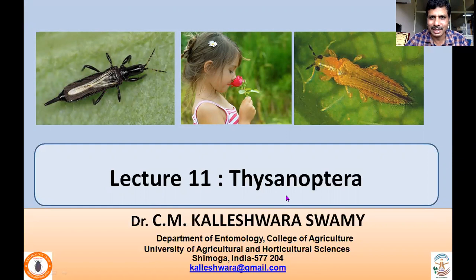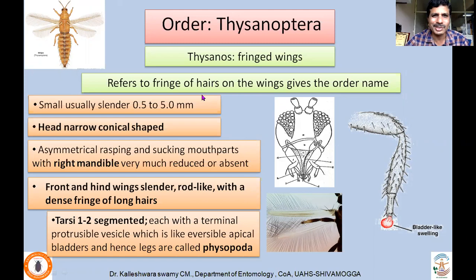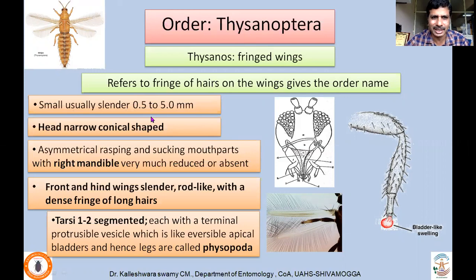Thysanoptera got their name because they possess fringed wings — there will be rows of hairs on these elongated, rod-like or ribbon-like wings. In terms of size, they are 0.5 to 5 mm in length; very rarely do they exceed 1 mm. Most measure about 0.5 mm. They are very minute, yellowish or blackish insects, and their head is narrow and conical shaped.